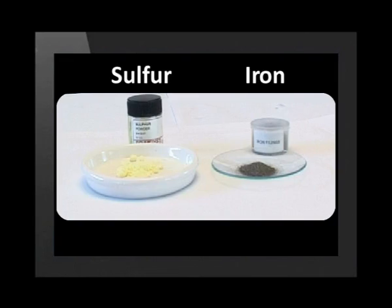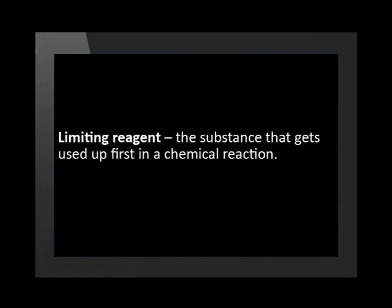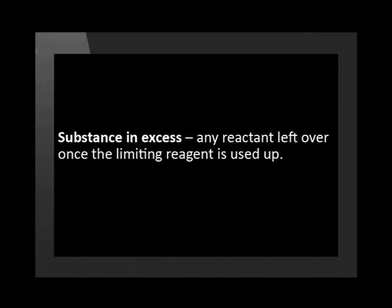So if we consider these two samples of reactants, they will react in a 1 to 1 mole ratio. Unless we have a perfectly equal number of moles in each beaker, one of the reactants will be used up before the other. The substance that gets used up first is known as the limiting reagent, because it is this substance that limits the amount of product formed. Any other reactants left over once the limiting reagent is used up are known as the substances in excess.